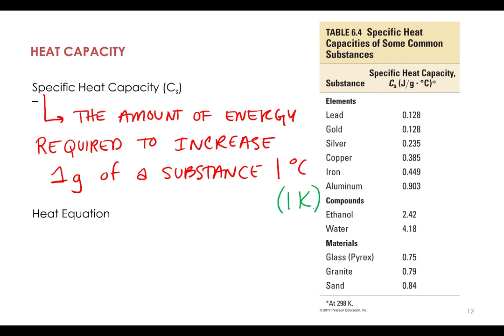And so on this table, table 6.4 from your textbook, you see some specific heat capacities. And generally, the better a conductor something is, like these metals, the lower the heat capacity. The energy is transferred to it very efficiently. And so it takes less energy to increase the temperature of copper or silver or gold or lead.